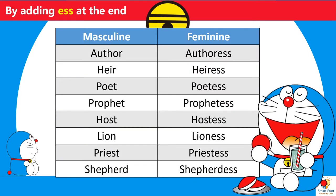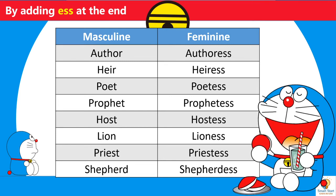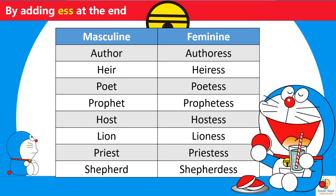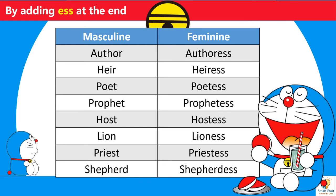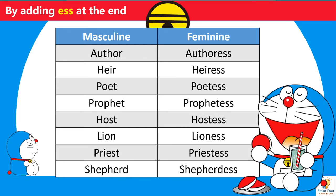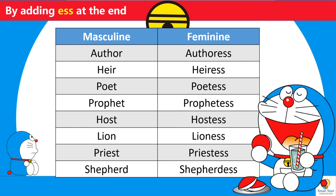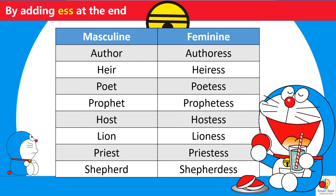Examples of masculine and feminine gender by adding -ESS at the end: author/authoress, heir/heiress, poet/poetess, prophet/prophetess, host/hostess, lion/lioness, priest/priestess, shepherd/shepherdess.